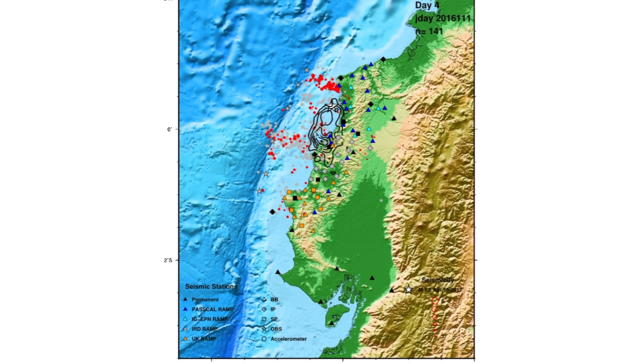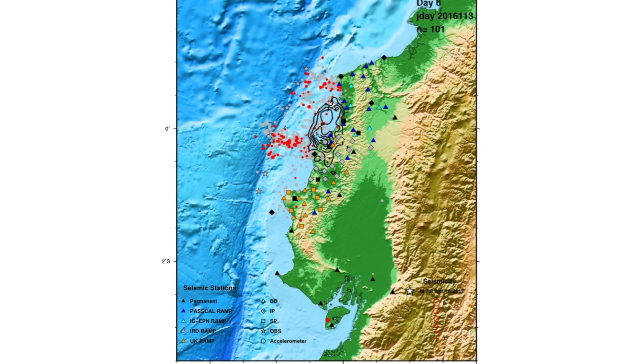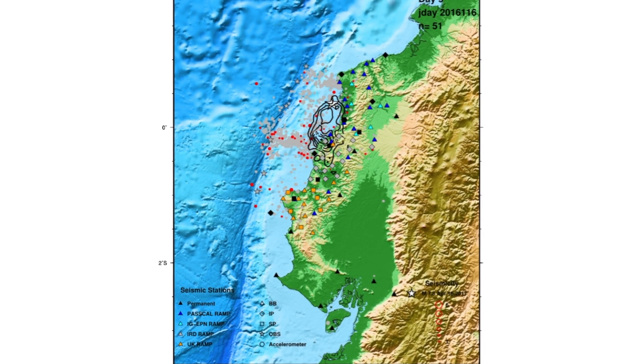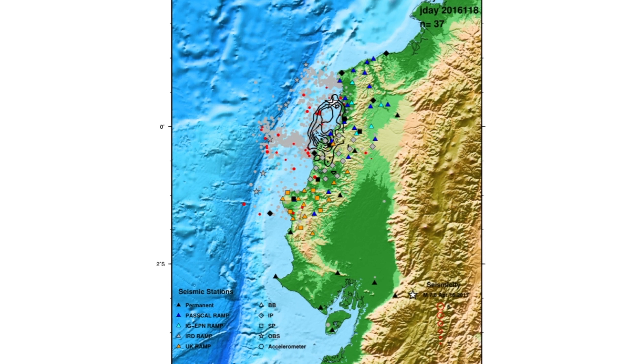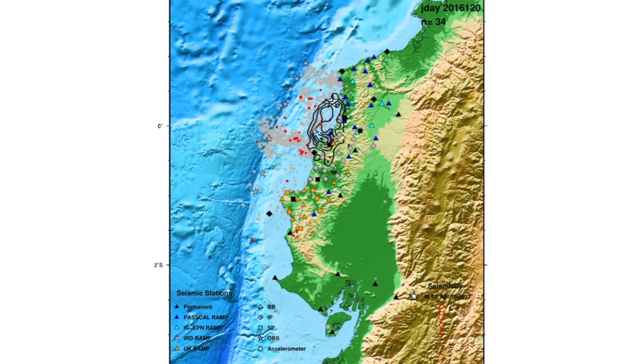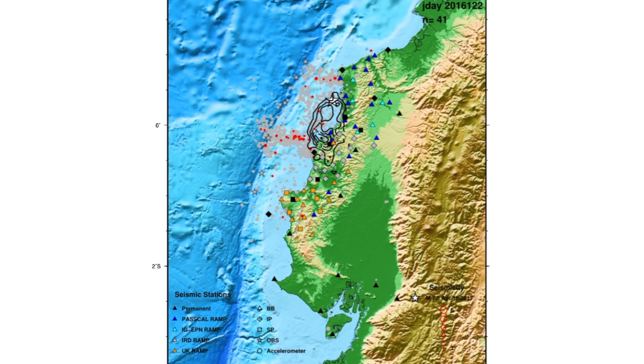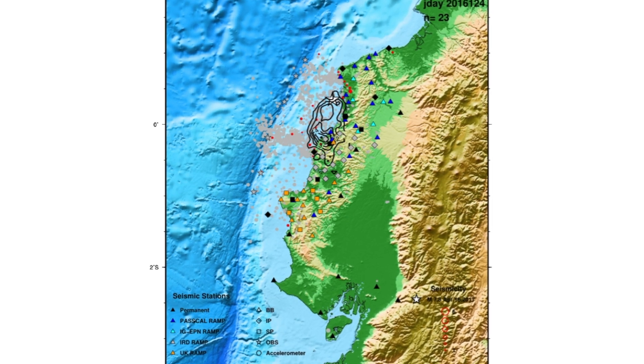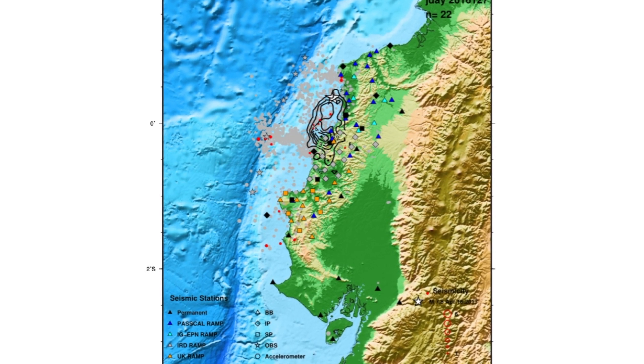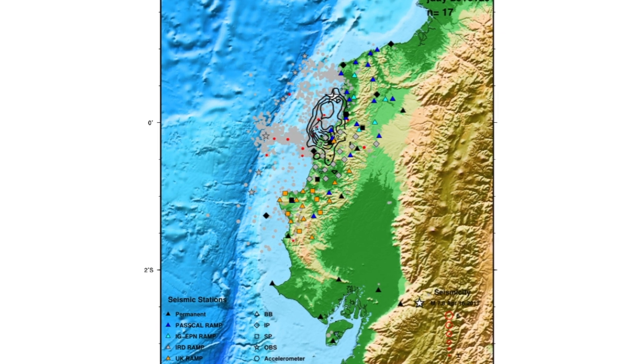One of the things we were particularly interested in studying is: what are the controls on the rupture processes? In the event of an earthquake, how much of that plate interface is actually going to rupture? How large is that rupture going to be? We saw very distinctive patterns in the aftershocks, and to some extent these patterns mapped what we call background seismicity — smaller magnitude earthquakes happening sort of all the time in the background.